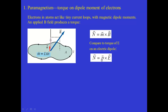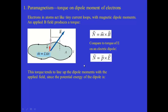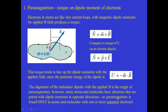So these two expressions are very closely analogous. The torque tends to align the dipole moments with the applied field, and this is expressed through the potential energy expression U = -M·B. So M cross B gives us the torque, and negative M dot B gives us the potential energy of the magnetic dipole moment in the presence of the magnetic field. The minus sign is there because when M and B are parallel that is the lowest energy configuration. Similarly, for an electric dipole moment in an electric field, the potential energy was -P·E. The alignment of the individual dipoles with the applied magnetic field is the origin of paramagnetism.